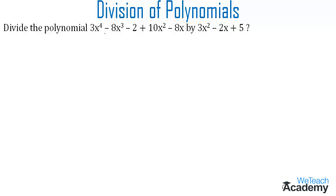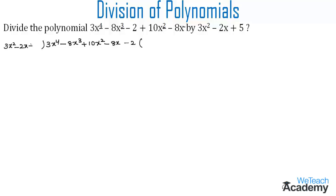Let us write this polynomial so that the powers of x are in descending order. So we write 3x⁴ minus 8x³ plus 10x² minus 8x minus 2. We have to divide this polynomial by 3x² minus 2x plus 5.